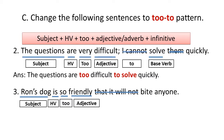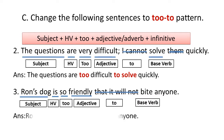Strike off 'will not' and use 'to' plus the base verb. The base verb is 'bite.' The answer is: 'Ron's dog is too friendly to bite anyone.'